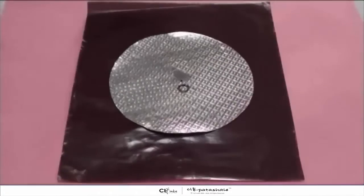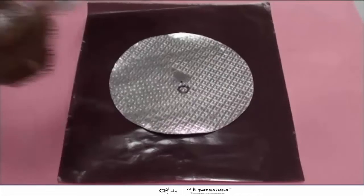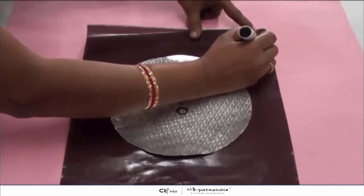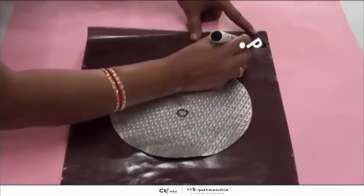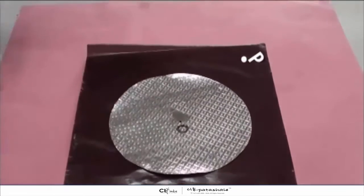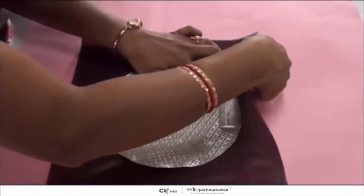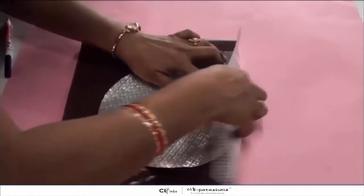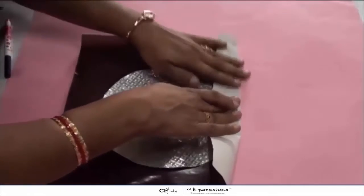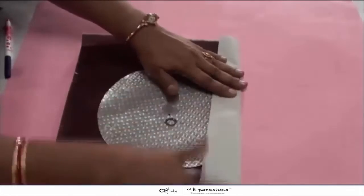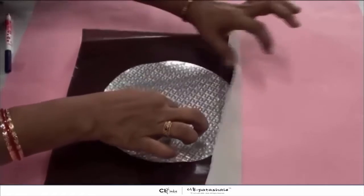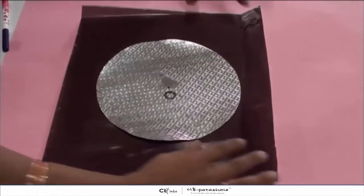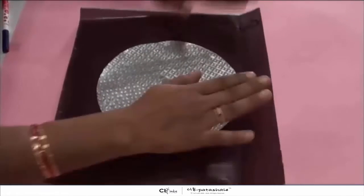Now take any point P that is outside the circle. After that, from P, fold the paper in such a way that it just touches the circle. Why did we do so? So that we get a tangent.